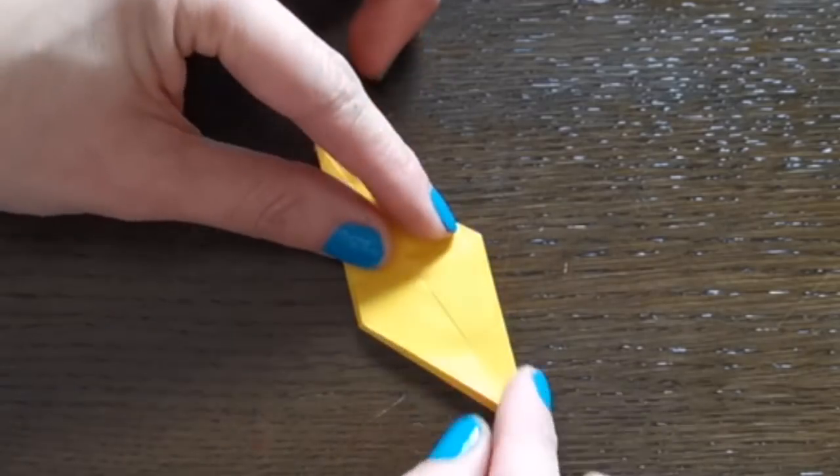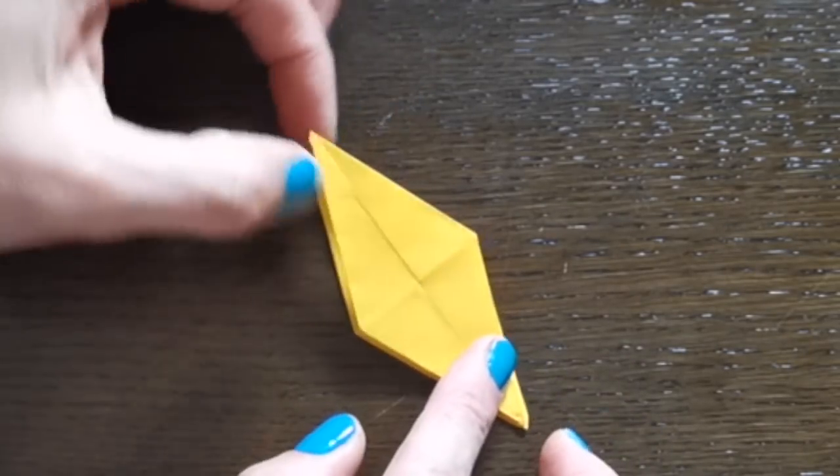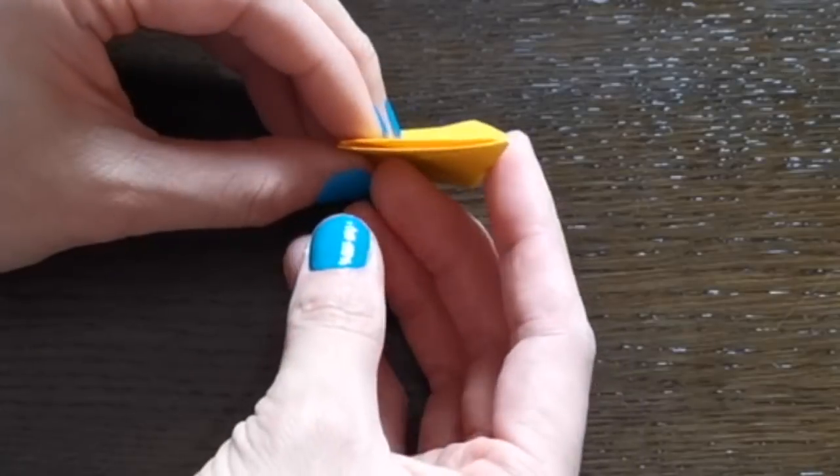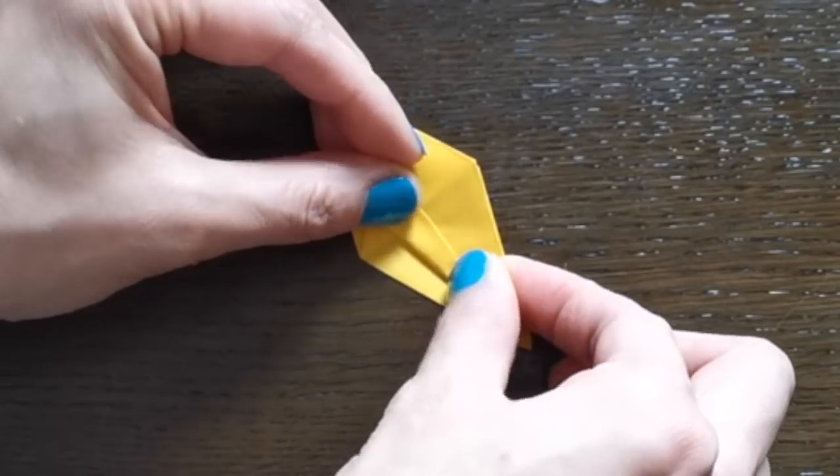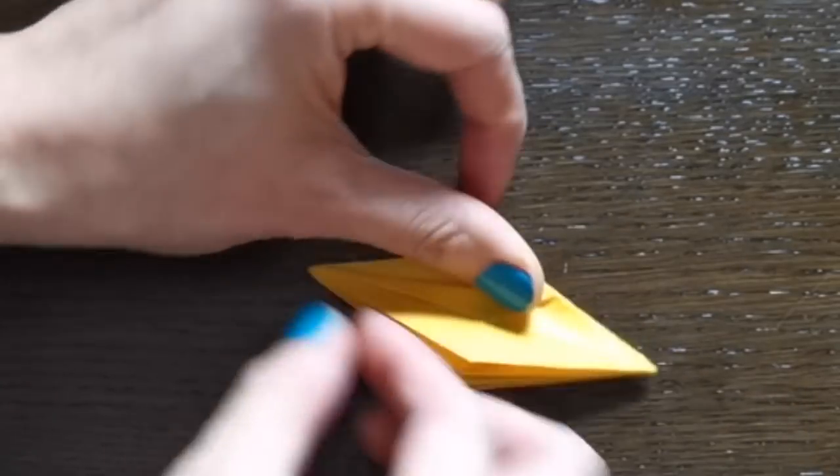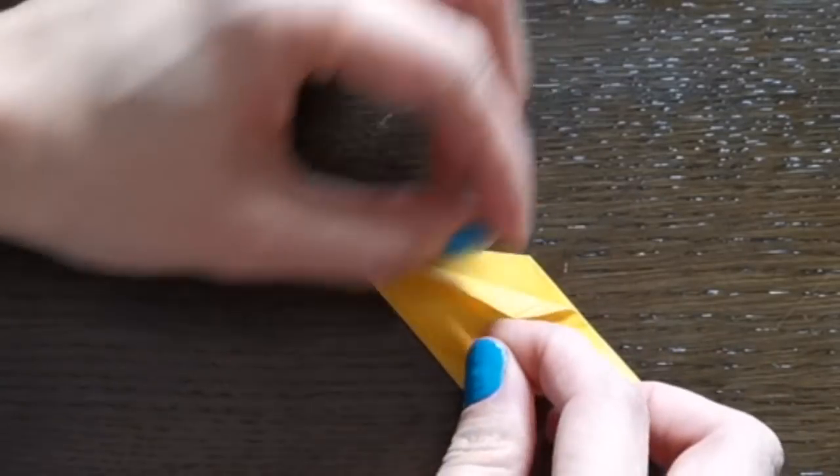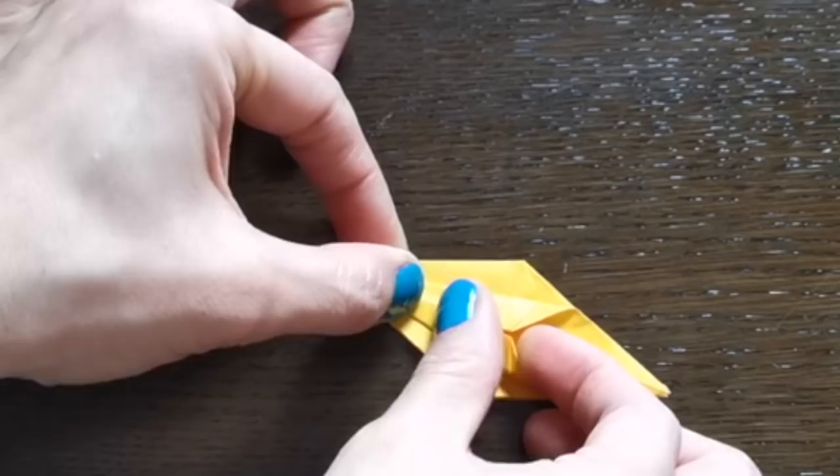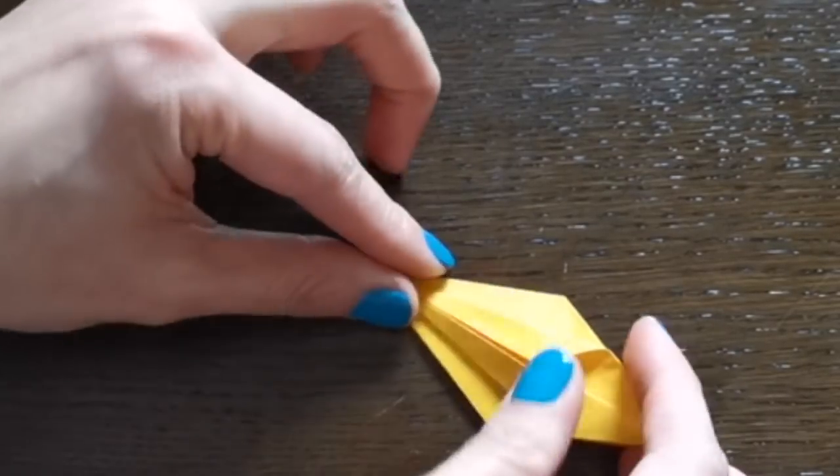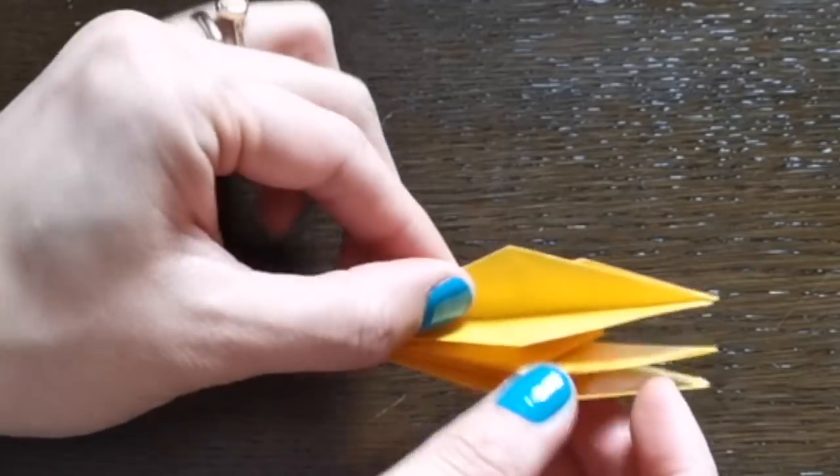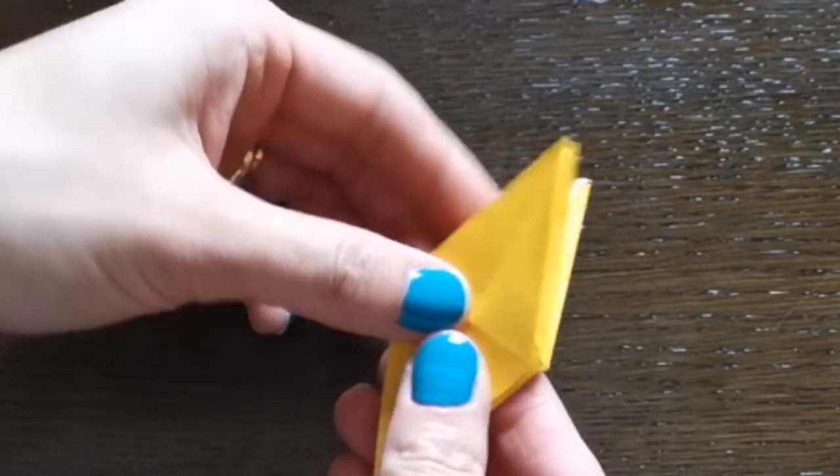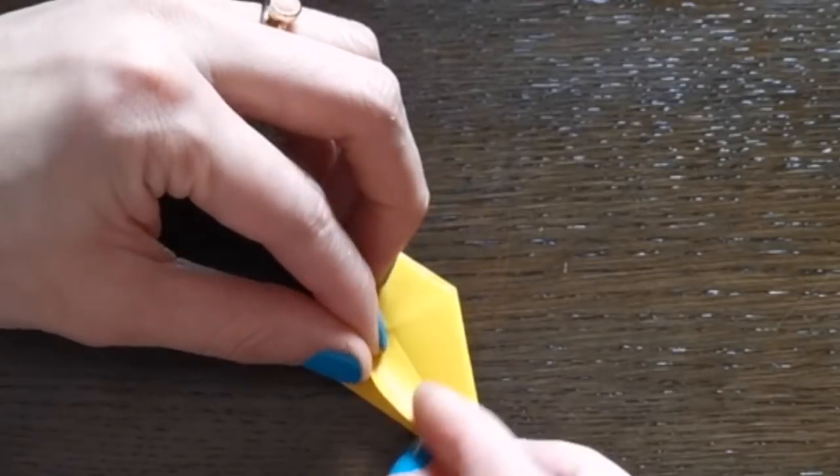Now we're going to use this side. So this is the open side, this is the closed side. We fold little triangles along the central line. Okay, all of them.